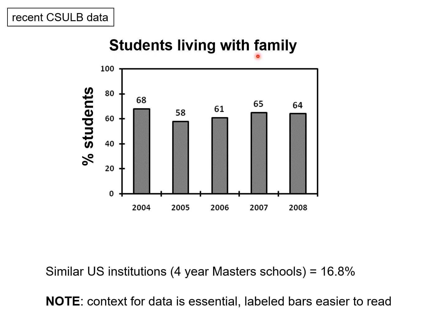This shows the percent of students living with their family across the same years. The values are much higher — about four times higher than the reference universities. This tells us something about Cal State Long Beach students: about four times as many of them, as a percentage of the population, live at home with their family. The labeled bars make it easier to read — this is nice, good practice for these sorts of bar charts.